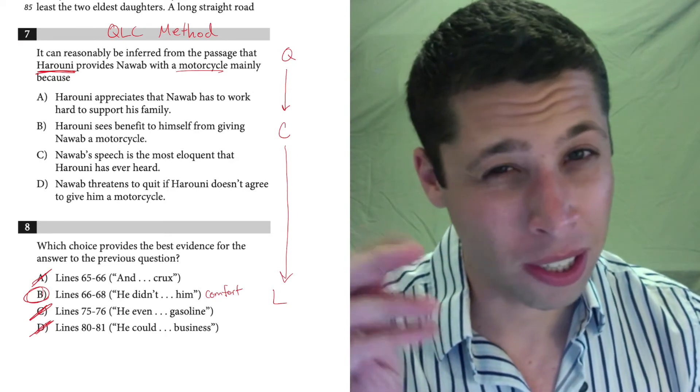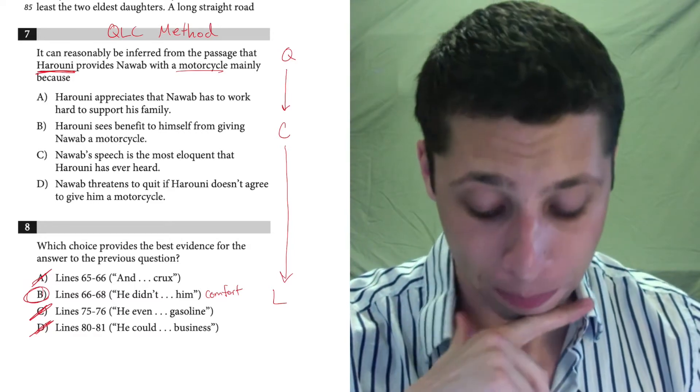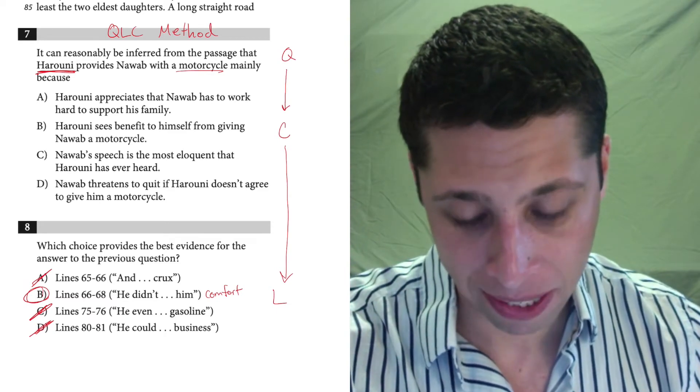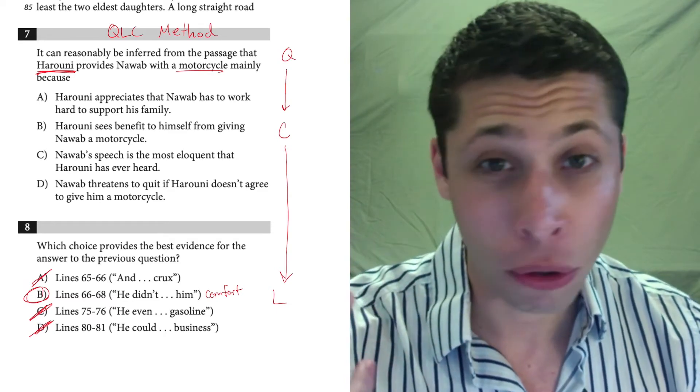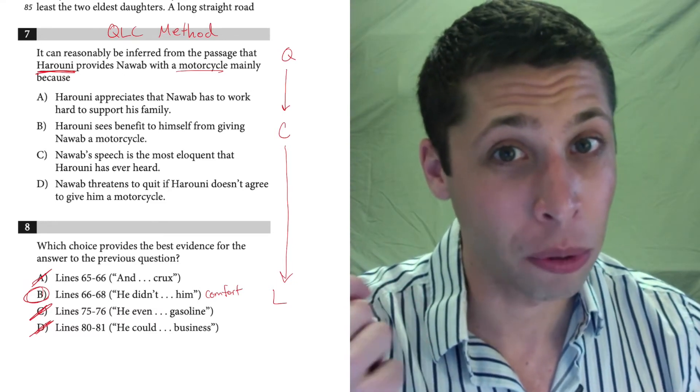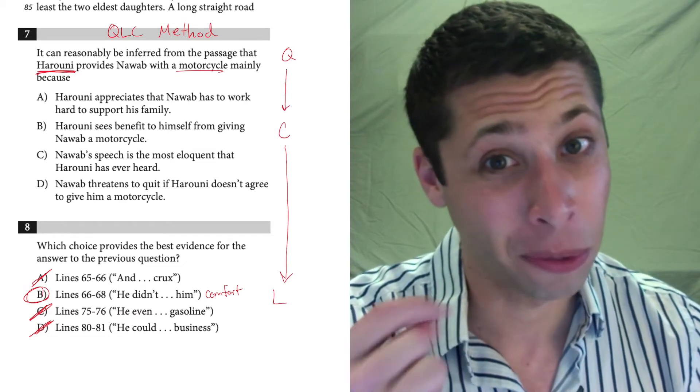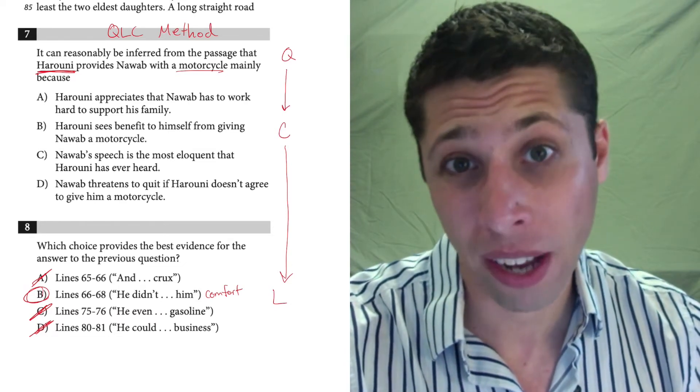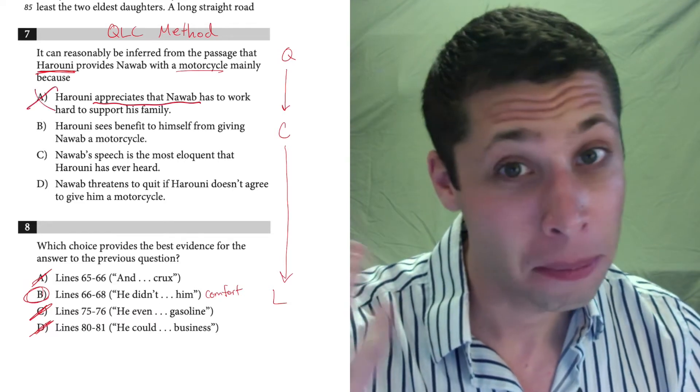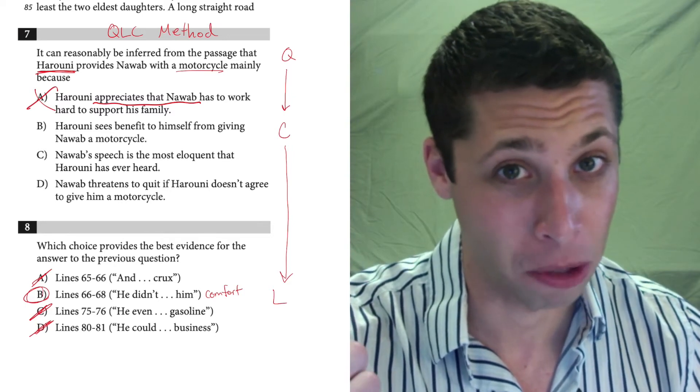So, we look at these choices and we see, does anything have to do with Haruni's comfort? That's what I'm really hoping for here. Choice A, Haruni appreciates that Nawab has to work hard to support his family. That might be true, but I don't remember reading anything about that. I don't really get the sense that Haruni cares about Nawab. If anything, the line reference that we read is that Haruni cares about Haruni. He cares about himself. So, this is maybe a little cruel, but it doesn't seem that Haruni really cares that Nawab is helping him so much.